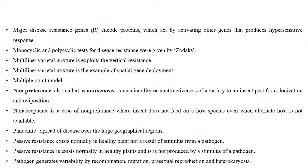Pathogens generate variability by recombination, mutation, parasexual reproduction, and heterocaryon formation. Biotype differentiation is less frequent than pathogen race differentiation because in biotypes there are only two mechanisms — mutation and recombination — whereas in physiological races of pathogens there is also parasexual reproduction and heterocariosis, giving more mechanisms for change.